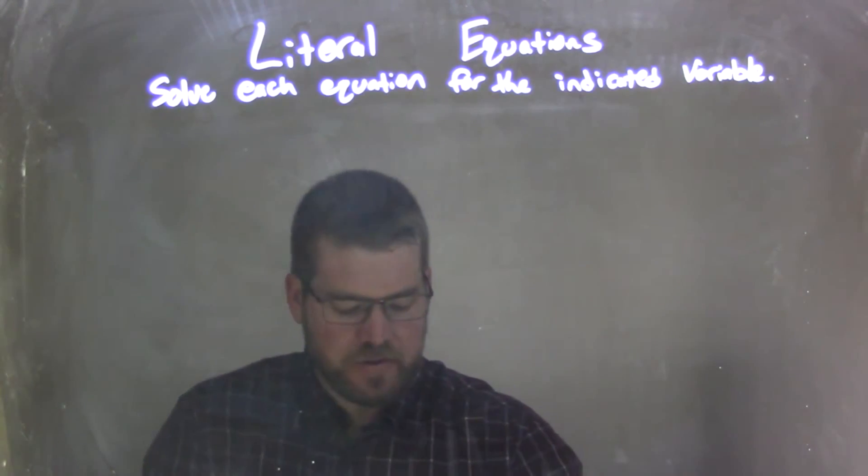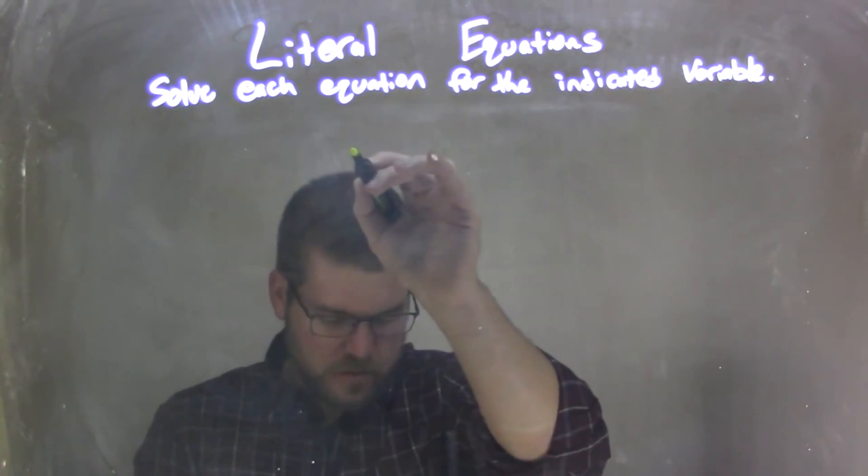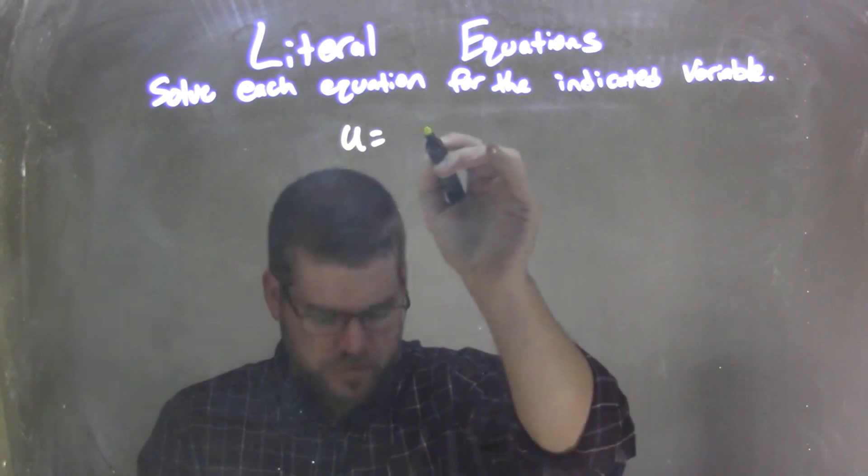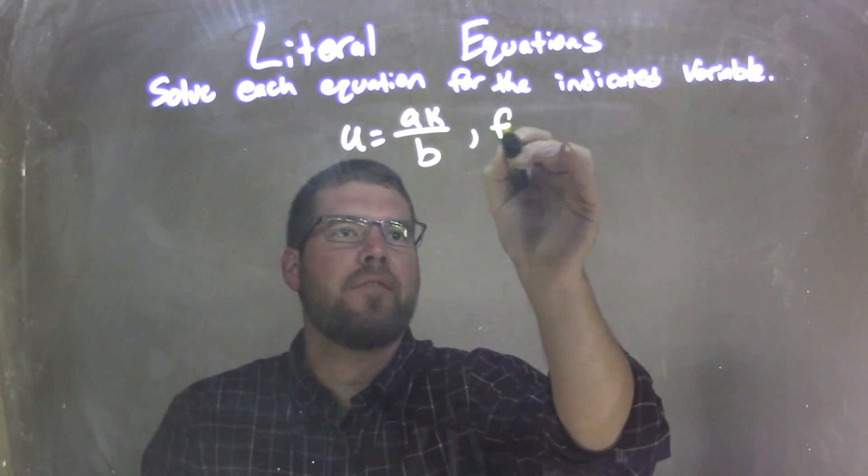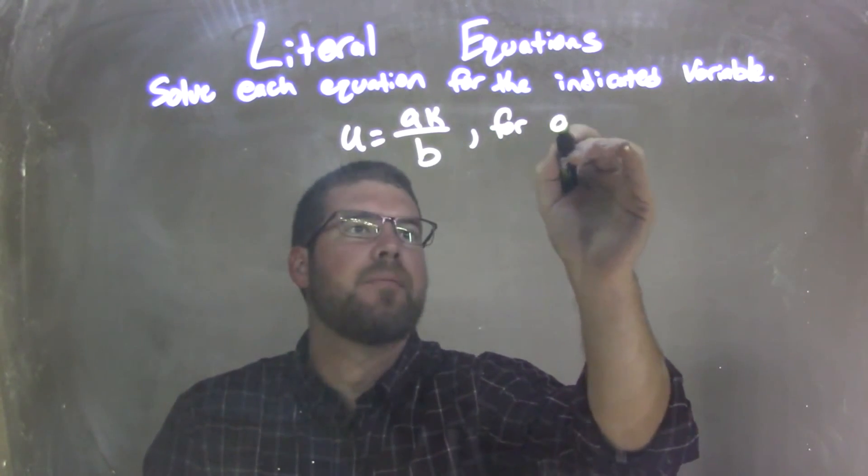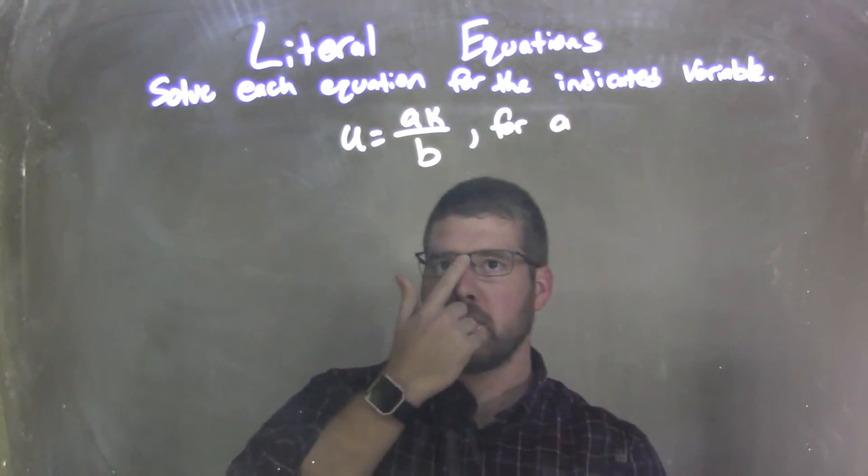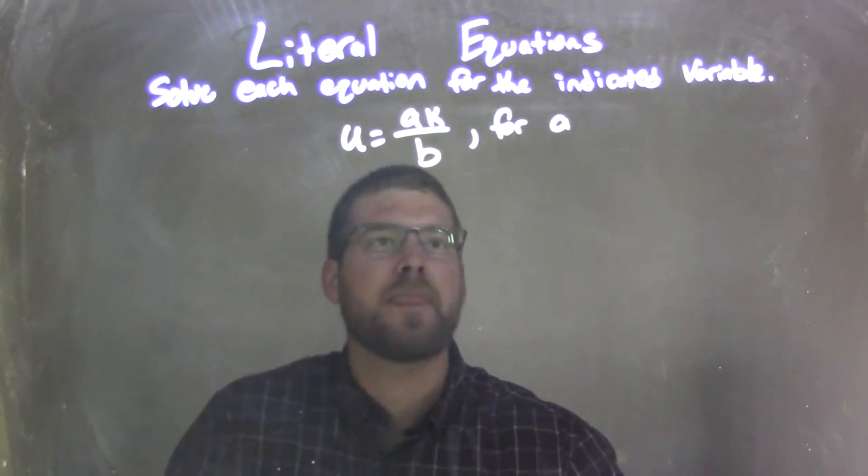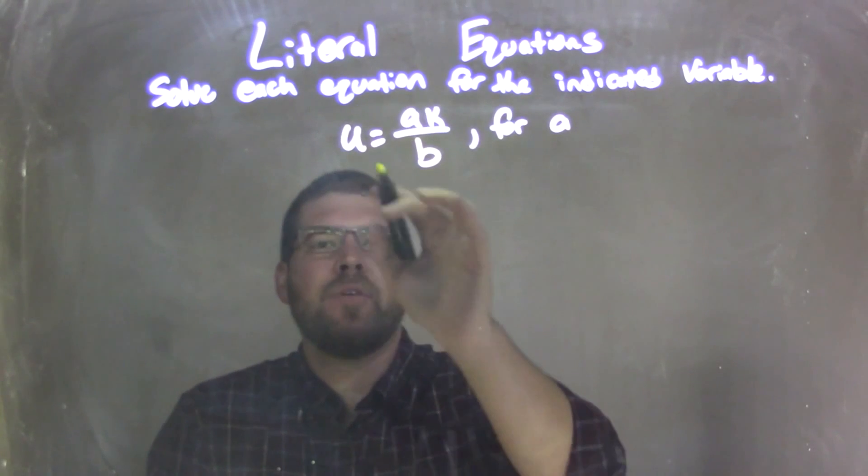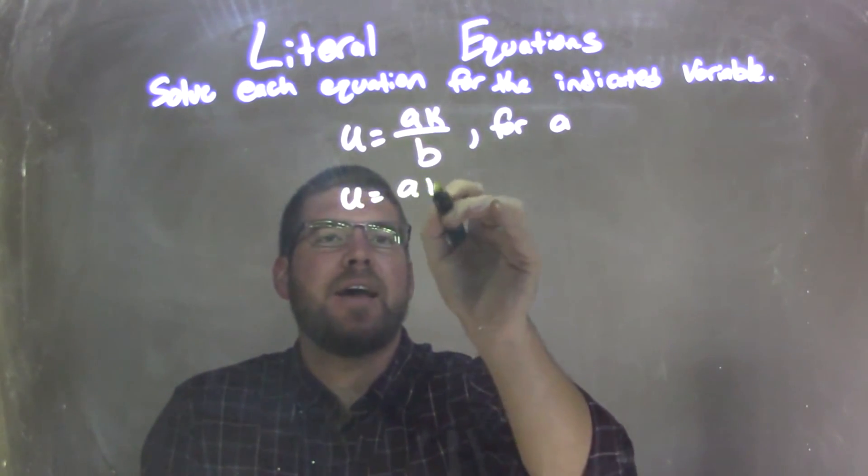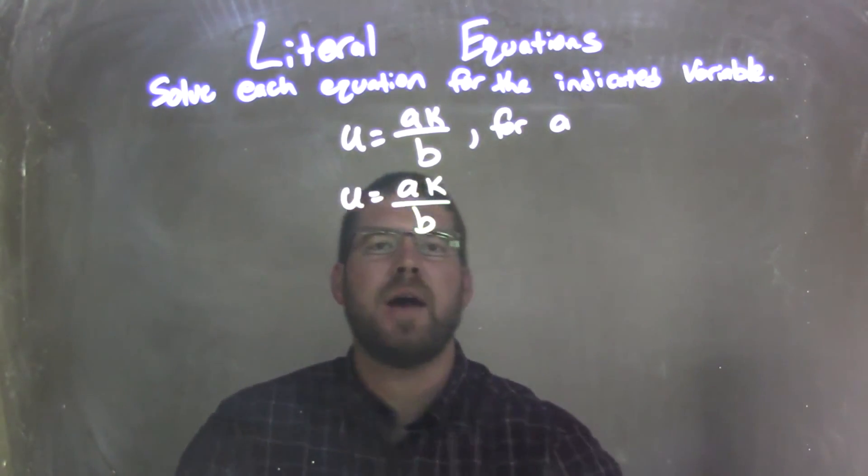So if I was given this equation, U equals AK over B, and we're solving that for A. So we have U equals AK over B, and we're solving that for A. I'm going to rewrite my equation.